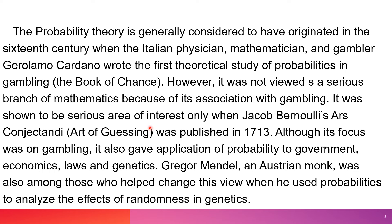It was shown to be a serious area of interest only when Jacob Bernoulli's Ars Conjectandi, or the Art of Conjecturing, was published in 1713. Although its focus was on gambling, it also gave applications of probability to government, economics, law, and genetics. Gregor Mendel, an Augustinian monk, was also among those who helped change this view when he used probabilities to analyze the effect of randomness in genetics.